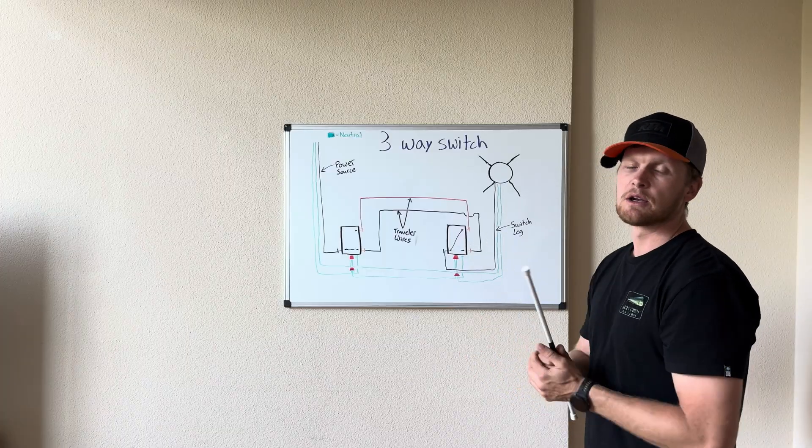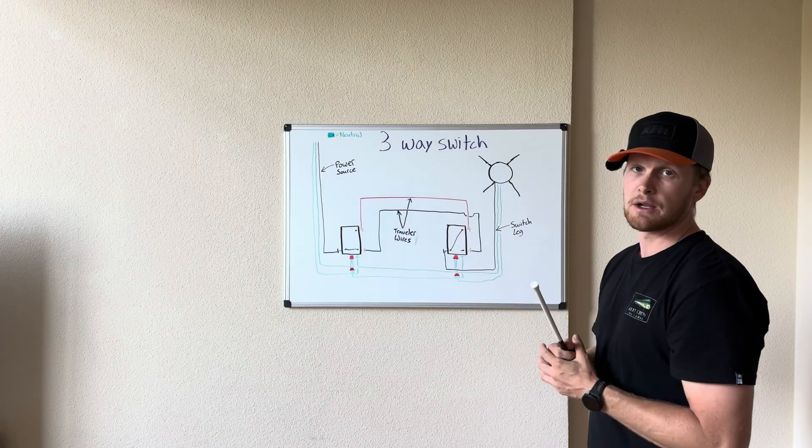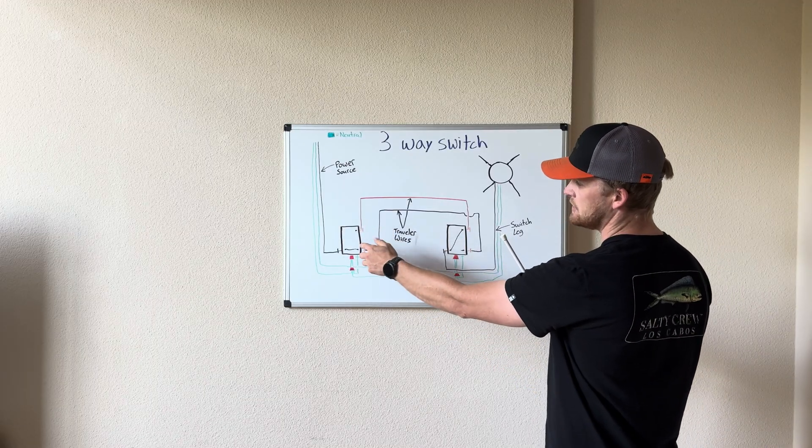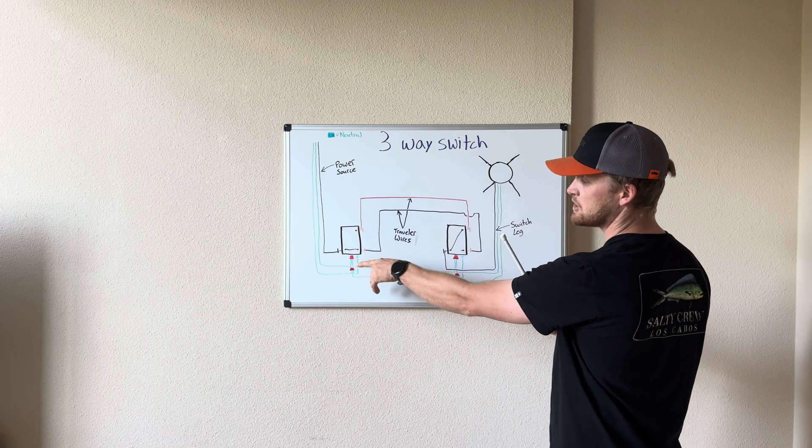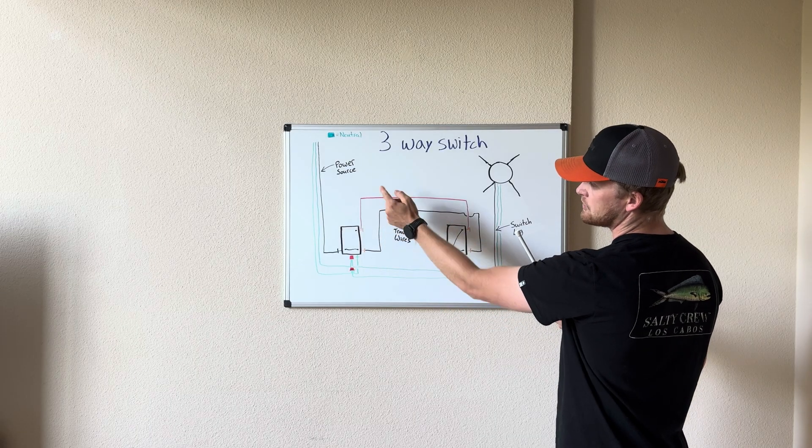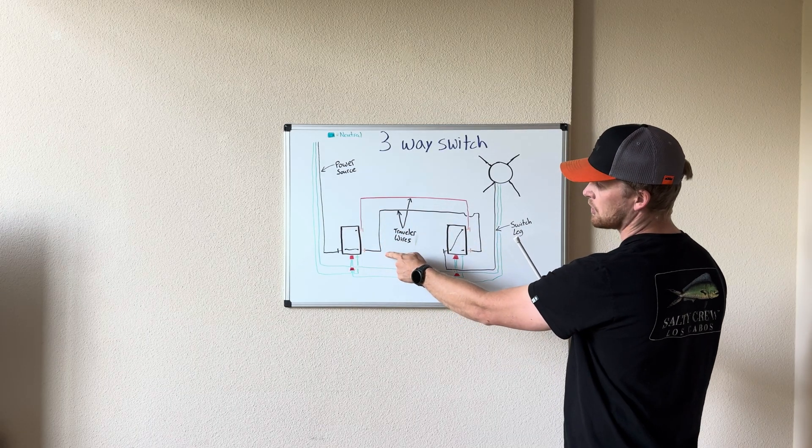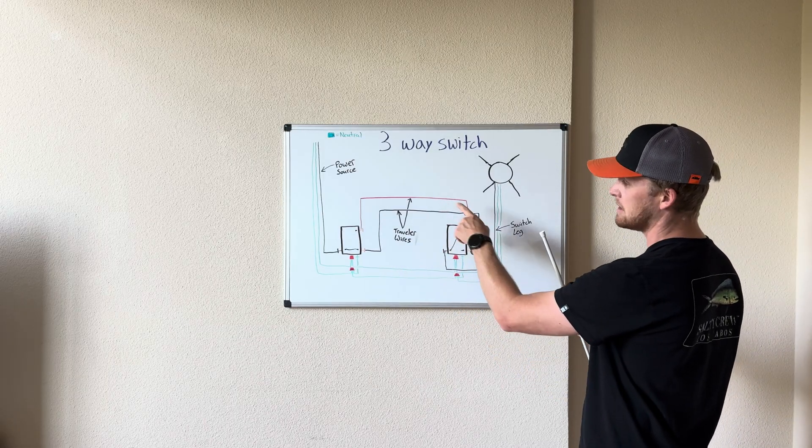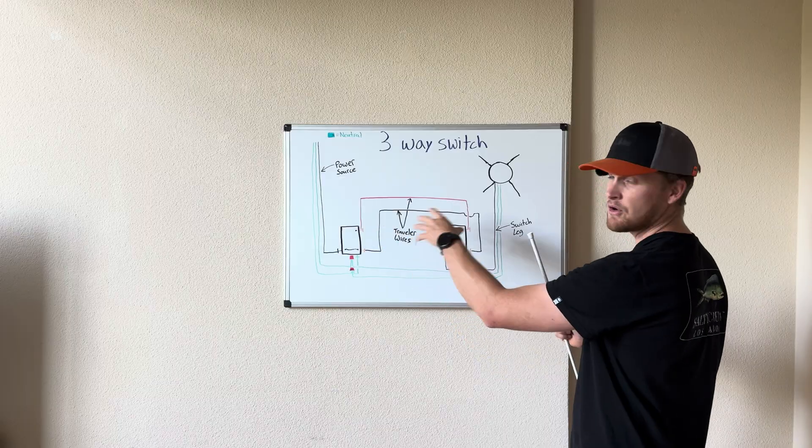Hopefully that provides a little bit of clarity into what's actually going on in a three-way switch and as you can see it's not that difficult. All you're doing is selecting between these two switch positions that you have to send power on either the red traveler wire or the black traveler wire and then over here it's the same exact thing and once they're both selected on the same traveler wire you have current flow.